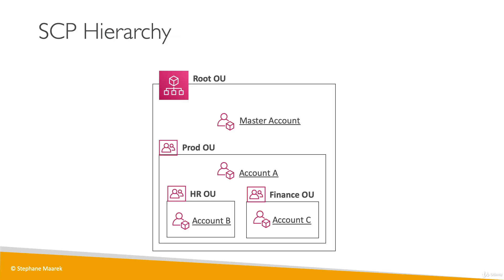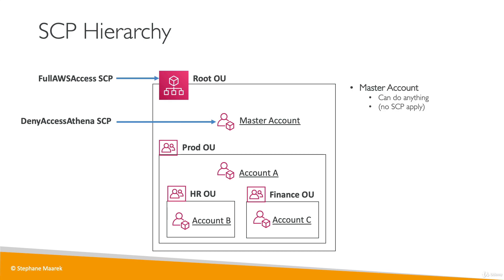Let's look at a concrete example. We have a root OU with a root account, a production OU with account A, an HR OU with account B, and a Finance OU with account C. On the root OU, we apply a Full AWS Access SCP, allowing everything. If we then apply a Deny Athena SCP to the master account, the master account can still do anything — because SCPs don't apply to the master account, so that deny SCP is completely ignored.